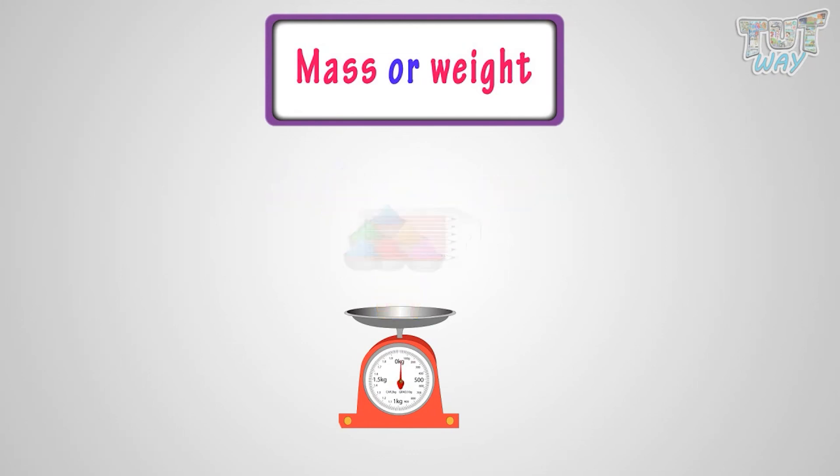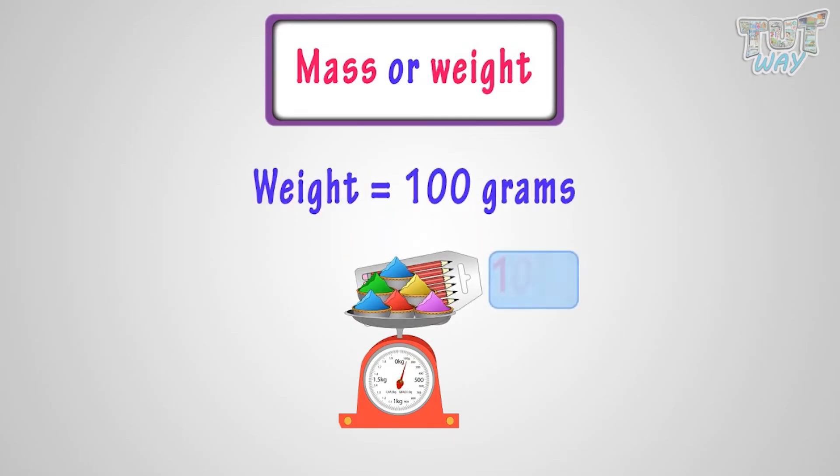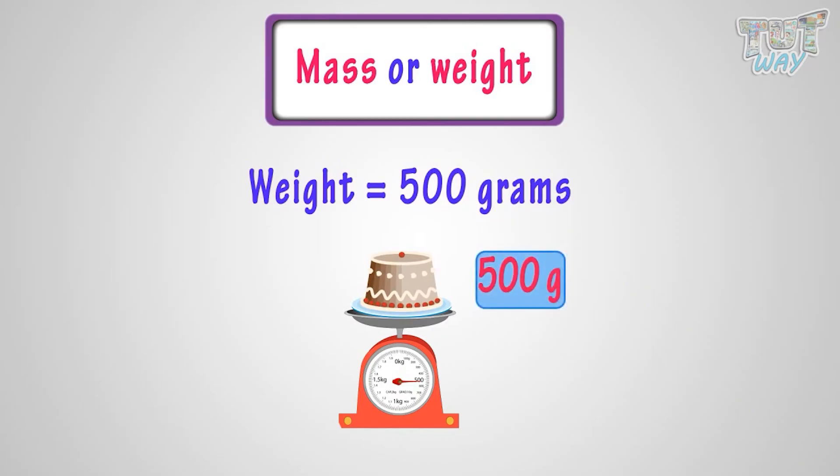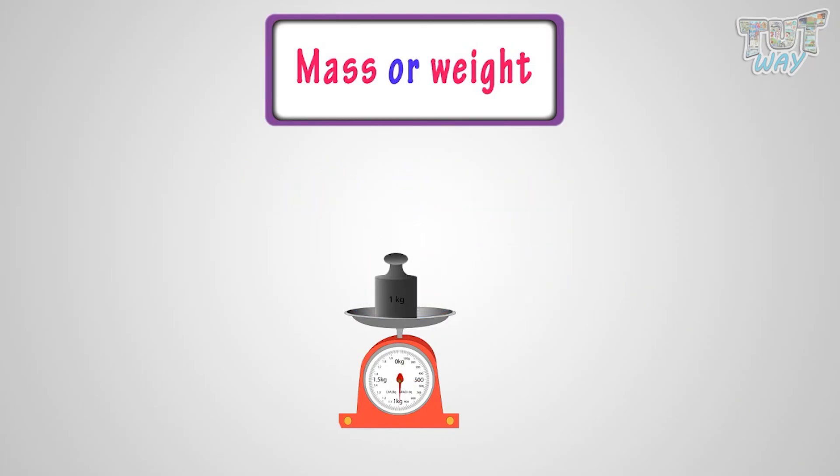Here are examples of some things weighing 100 grams. Here is a cake weighing about 500 grams. Here is an object weighing 1 kilogram or 1 kg.